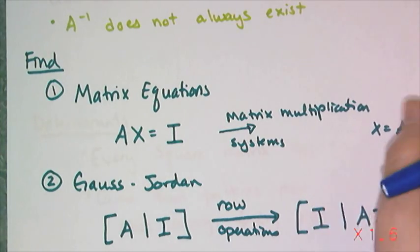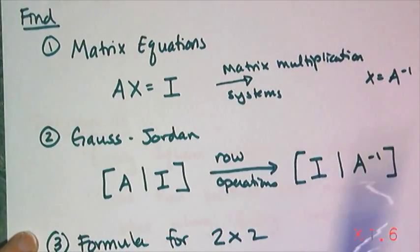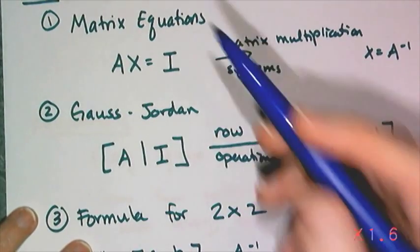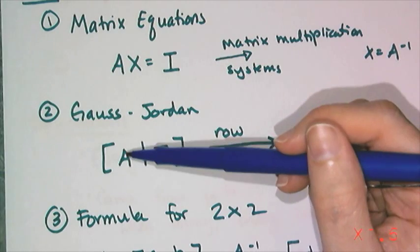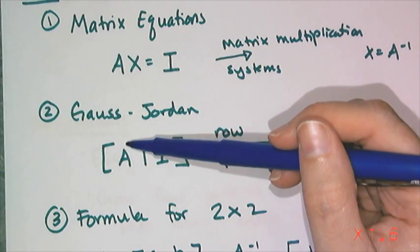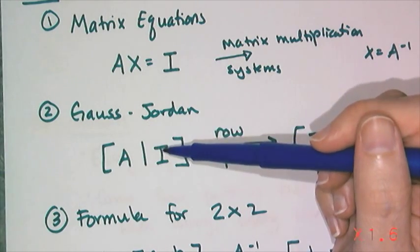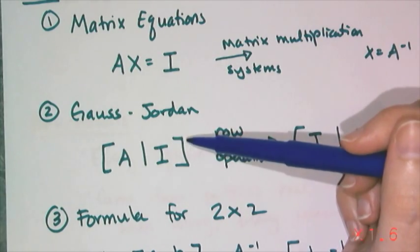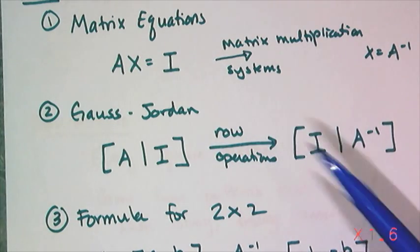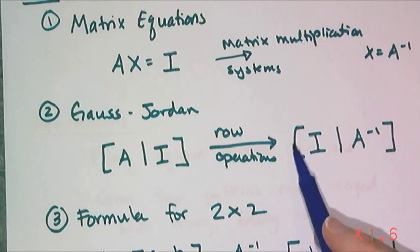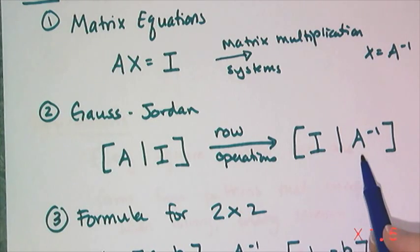We can also use the incredibly tedious process of Gauss-Jordan elimination, where we set up the augmented matrix with matrix A on one side, the identity on the other side. We use a series of row operations to transform the left side into the identity, which then gives us the inverse on the right side.